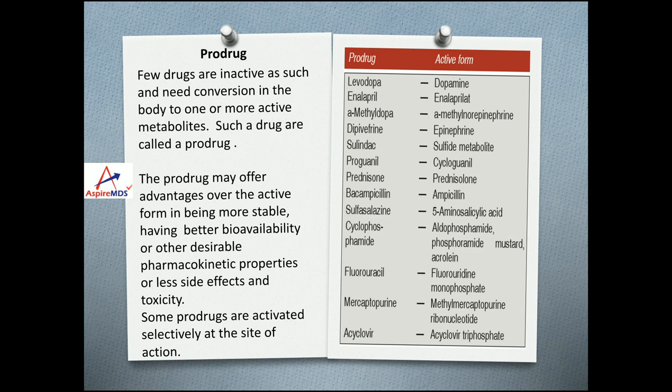A prodrug is a drug that is inactive as such and needs conversion in the body to one or more active metabolites. Prodrugs may offer advantages over the active form — being more stable, having better bioavailability or desirable pharmacokinetic properties, or fewer side effects. Some prodrugs are activated selectively at the site of action. Examples of prodrug to active drug conversions include: levodopa to dopamine, proguanil to cycloguanil, fluorouracil to fluorouridine, acyclovir to acyclovir triphosphate, and others.